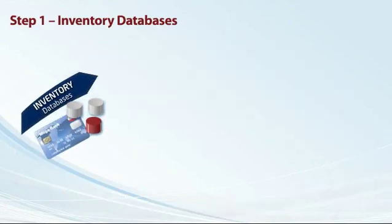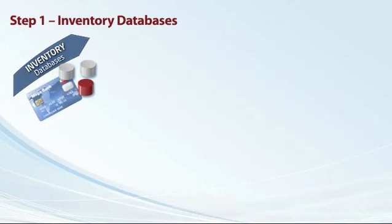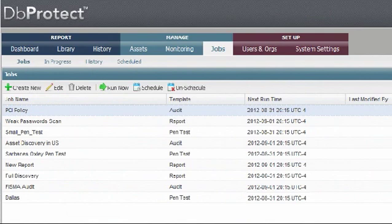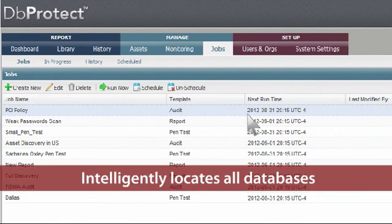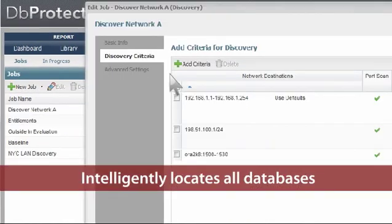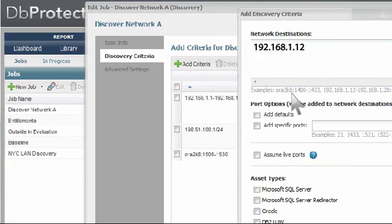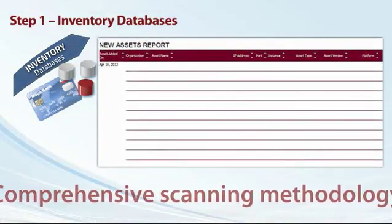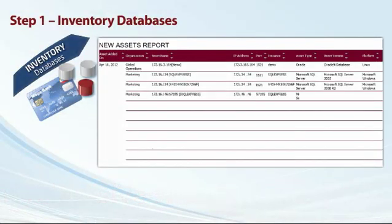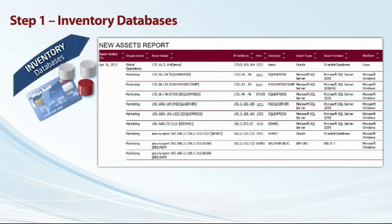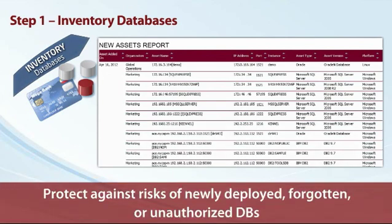Step 1: Inventory of Databases. DB Protect's Active Discovery identifies the databases deployed within an enterprise to provide a detailed inventory of database assets, including those containing sensitive data, powered by a comprehensive scanning methodology. Active Discovery identifies databases on an ongoing basis to protect against the risks associated with newly deployed, forgotten, or unauthorized databases.